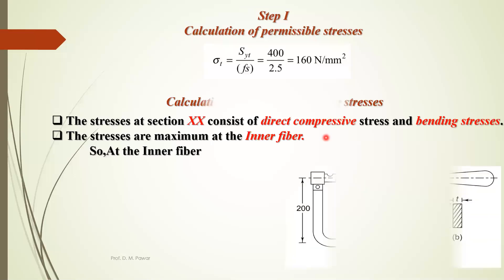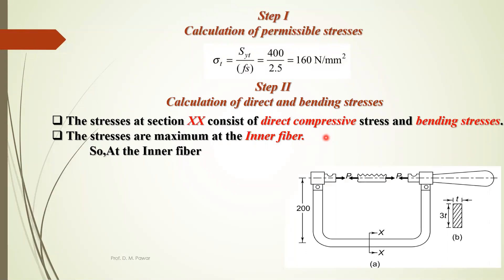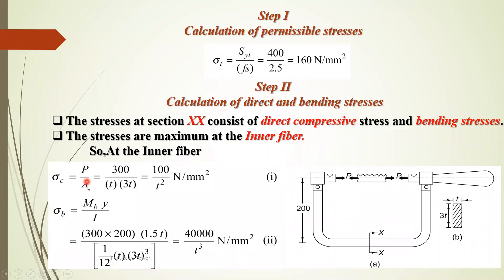Step 2 is to identify the types of stresses developed at the cross section. From the diagram, the cross section at XX will be subjected to compressive stress as well as bending stress. Compressive stress arises because the two ends of the frame are getting compressed due to the initial tension of the blade. Compressive stress is simply force divided by area, where area equals 3T multiplied by T.